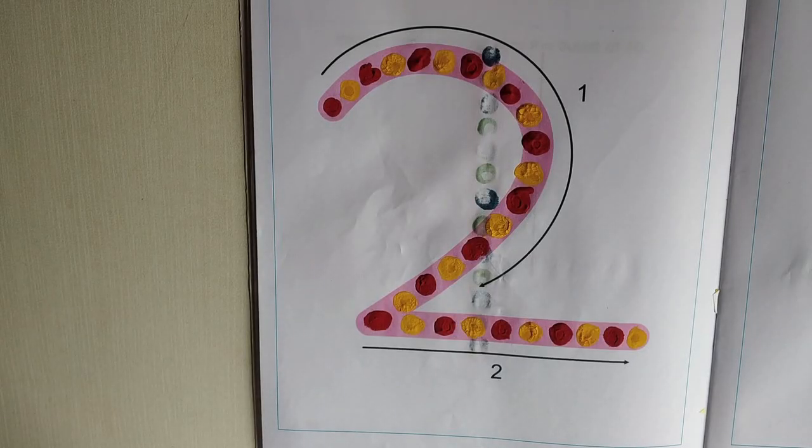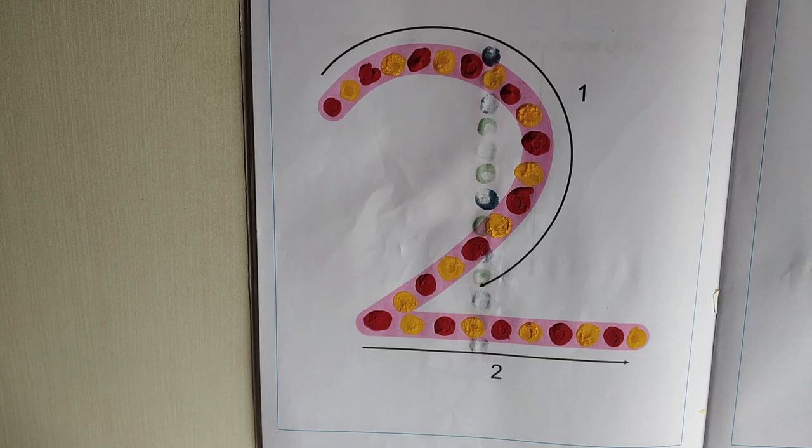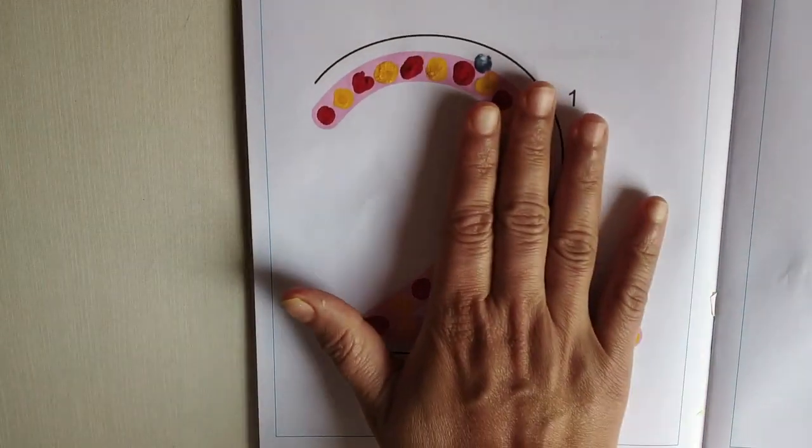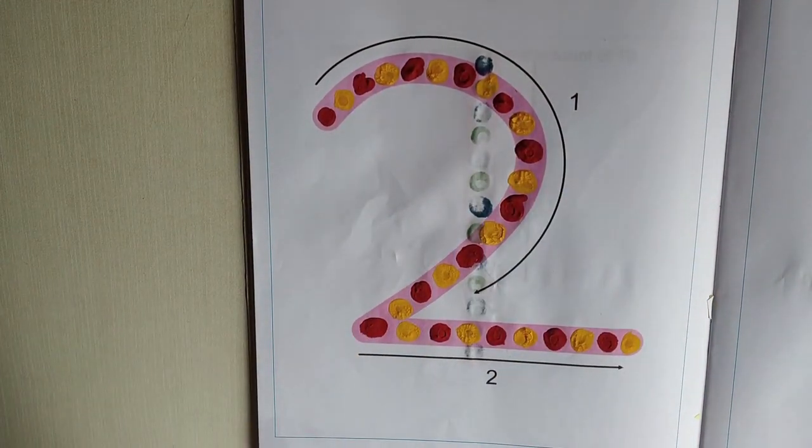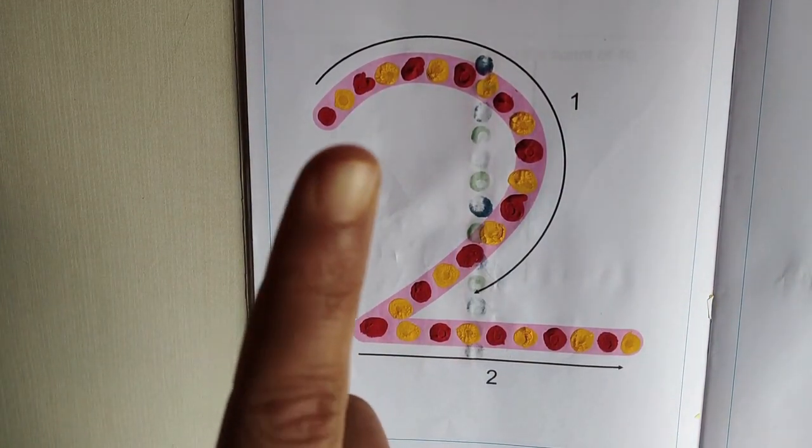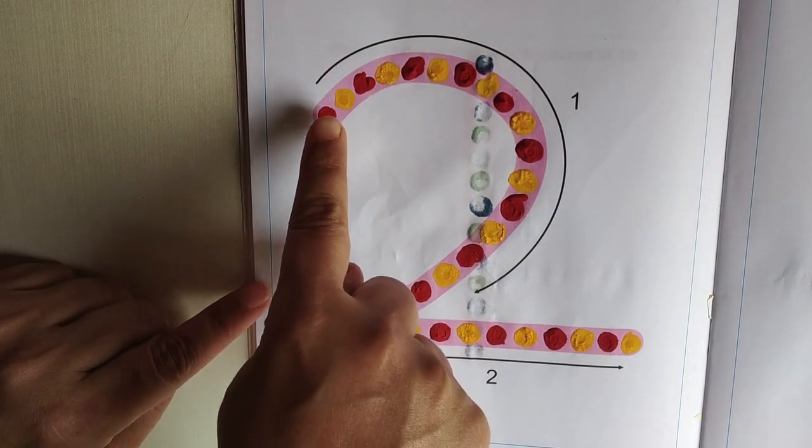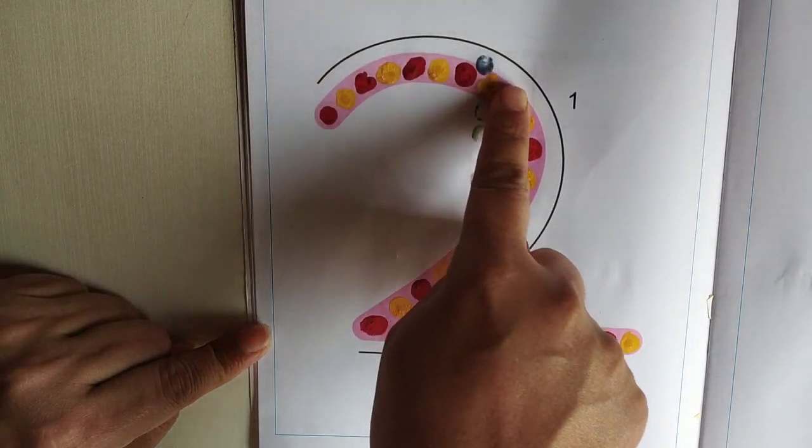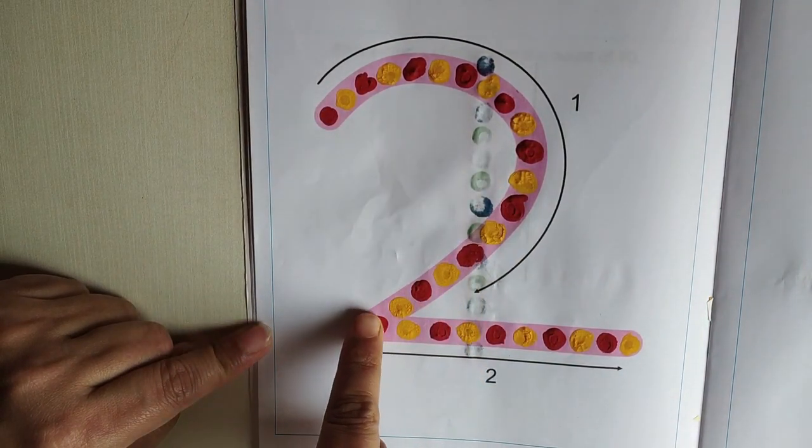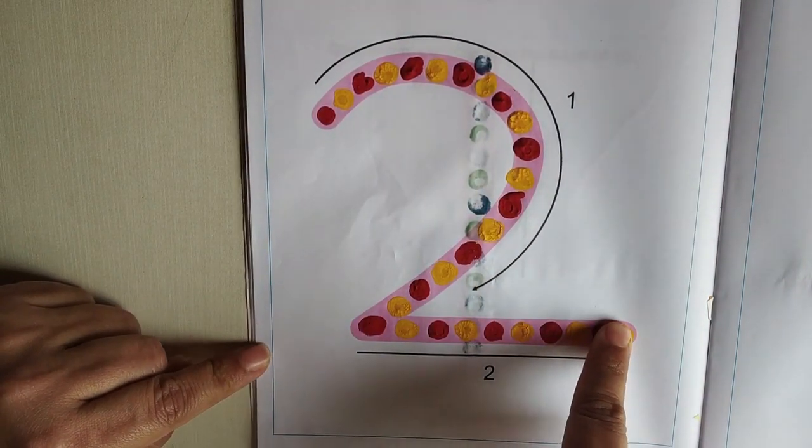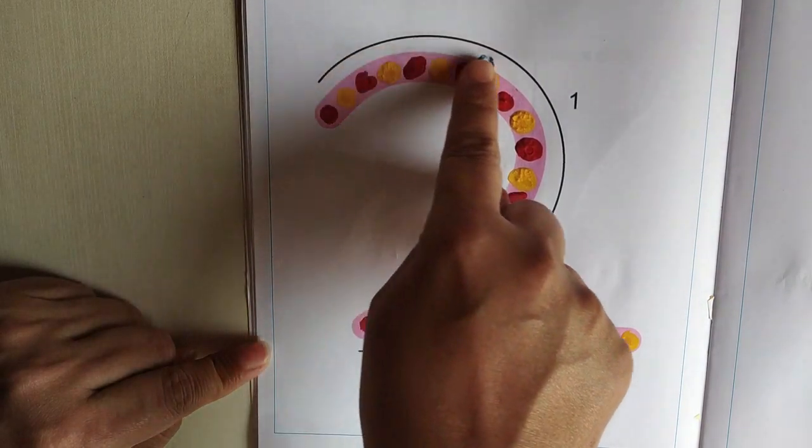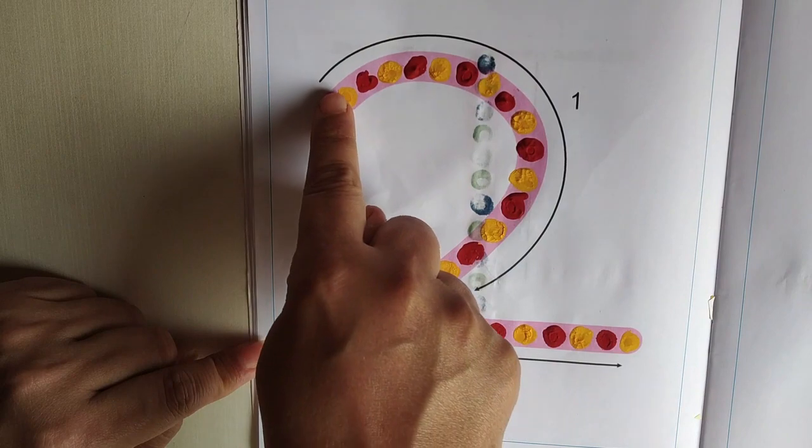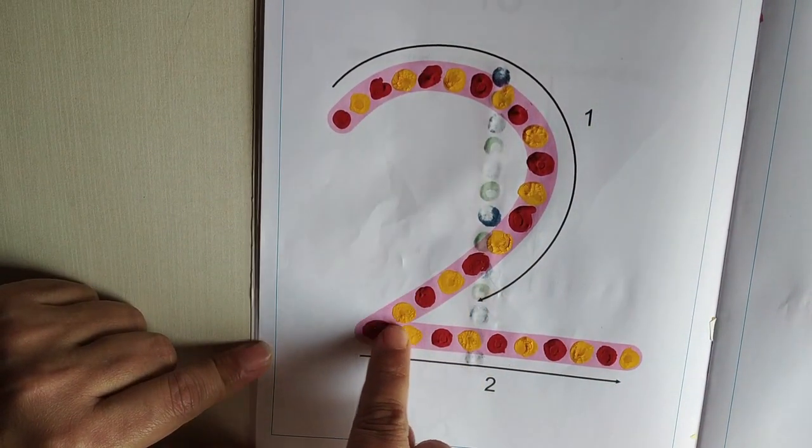Good work done, children. Now I will explain what you are going to do. We have finished number one and number two. Take your pointer finger and trace the number like this. Trace the number two. Again one more time. Two.